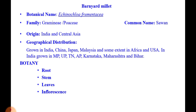Regarding the botany of barnyard millet: roots are fibrous and shallow, stem is slender, leaves are flat, glabrous, and slightly hairy without ligule. The inflorescence is a panicle with densely crowded unawned spikelets, densely packed in 3 to 5 rows. The grain is generally yellow or white.